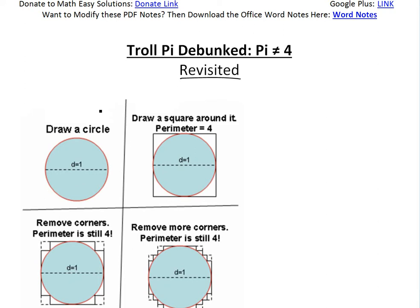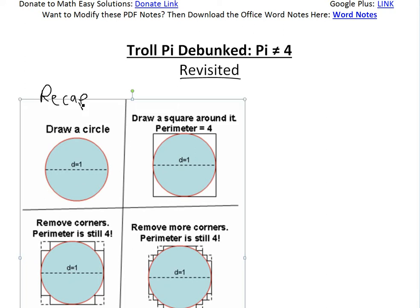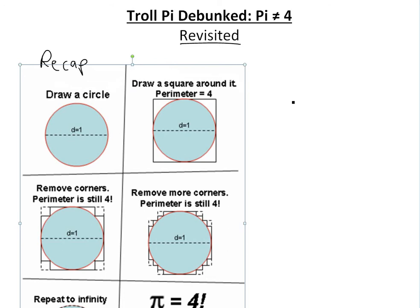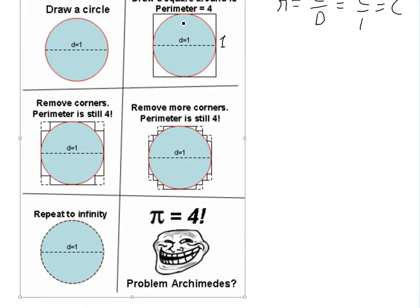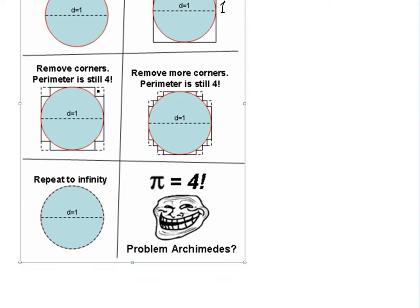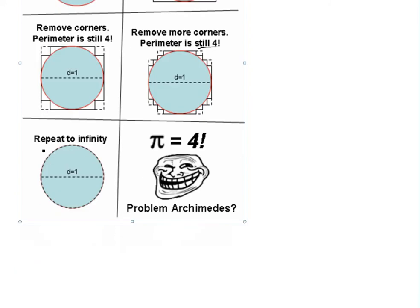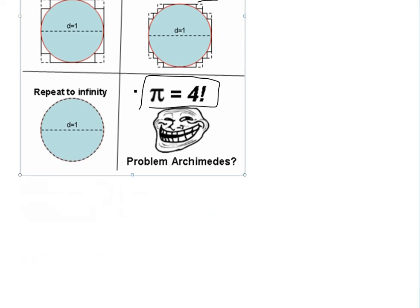You can see those in the video links below. First, I'm going to recap the troll pie. The troll pie says: if you draw a circle with a diameter of 1, and you know that π is defined as circumference divided by diameter, and since diameter is 1, then C over 1 equals C — so the circumference equals π. Now if you draw a square around it, it has a perimeter of 4, since all sides are 1. If you break the corners up, you're not changing the total perimeter, and as you can see it's getting closer to the circle. Keep doing this to infinity, and the perimeter is still 4 — so basically the square perimeter equals the circle, meaning π = 4. And then you get the troll face: 'Problem, Archimedes?'